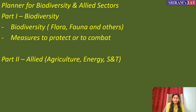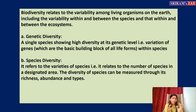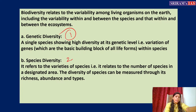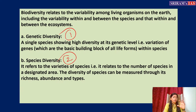Biodiversity is the variability among living organisms. There are three types: genetic diversity — variation in genes within the same species, like different types of oranges or apples; species diversity — the number and richness of species in a particular place; and ecosystem diversity — the variety of different ecosystems like forests, mangroves, and deserts.